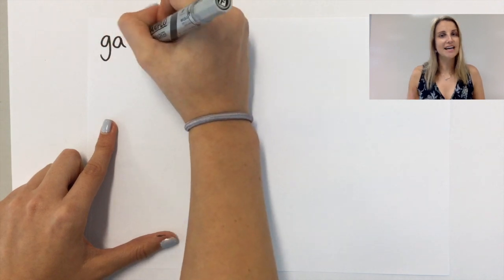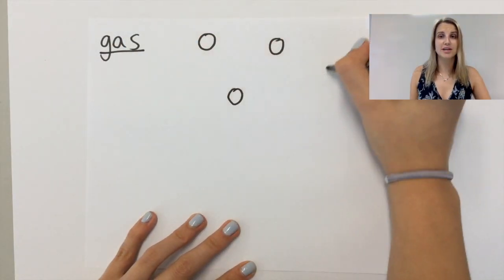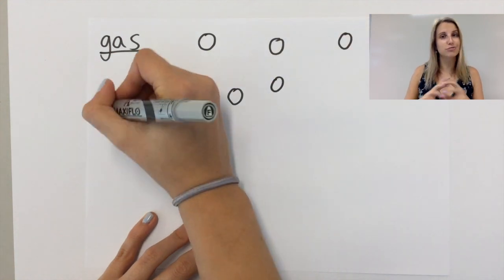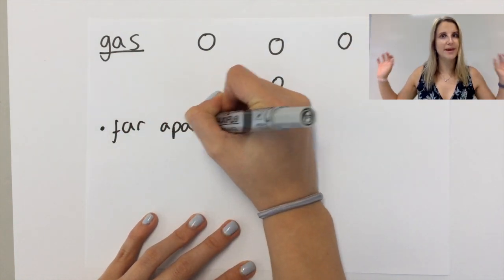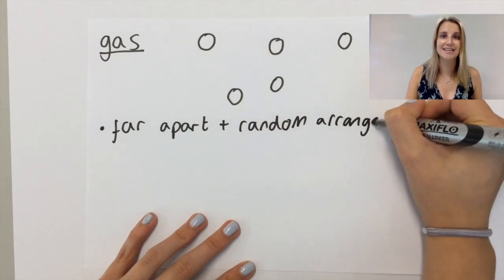Gases are the last ones that we need to deal with in this video. As you can see the particles in this are super far away from each other and they have a completely random arrangement, but just the important thing being they're really far away from each other by comparison to a solid and a liquid.